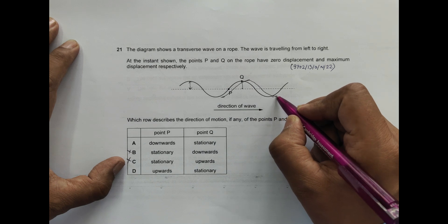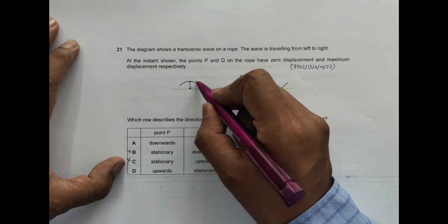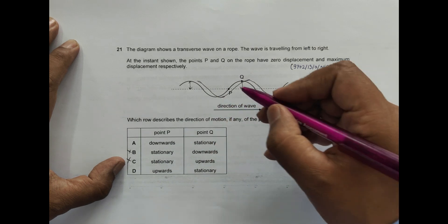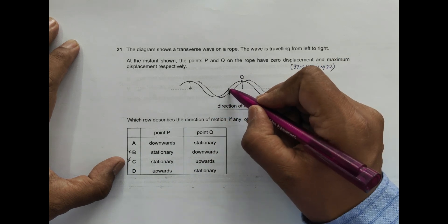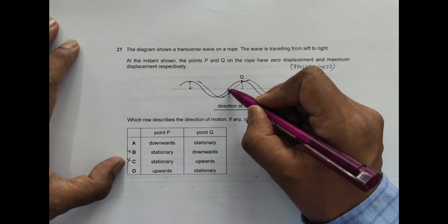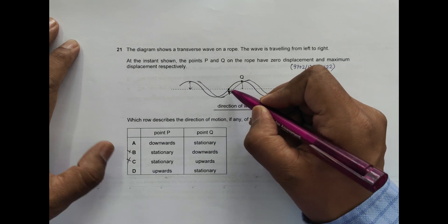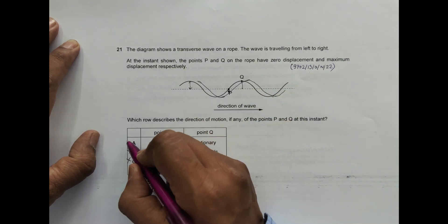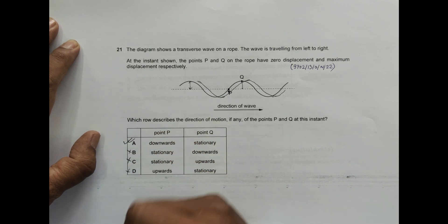And here also it should be somewhat like this. So that means this point is going down right now. Means after some time it reaches here, so that means right now it is going down. So that's why point P down is in choice number A.